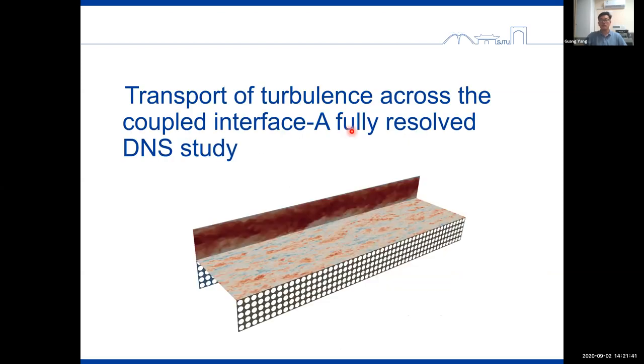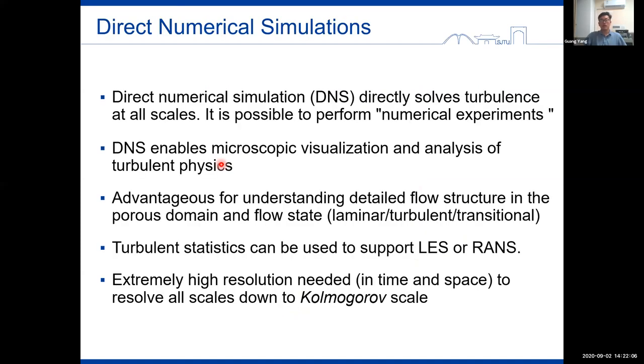As I just mentioned, the porous medium itself has the nature of different length scales, and so does turbulence. On the other hand, it is generally not easy to perform high resolution and high frequency measurements inside a 3D porous medium. Therefore, a fully resolved direct numerical simulation provides an optional way to understand such flow physics. Direct numerical simulation solves turbulence at all scales. Therefore, it is possible to perform a numerical experiment. It also enables microscopic visualization and analysis of turbulent physics. And because no turbulence model is used for the DNS calculations, the turbulent statistics can also be used to support other models such as large eddy simulations or Reynolds averaged simulations.